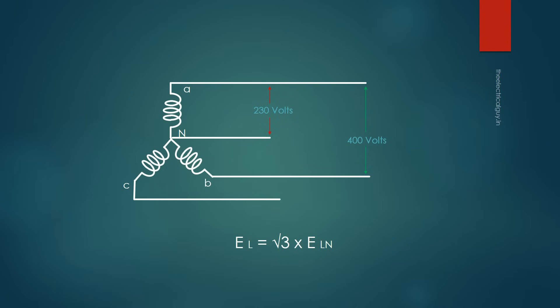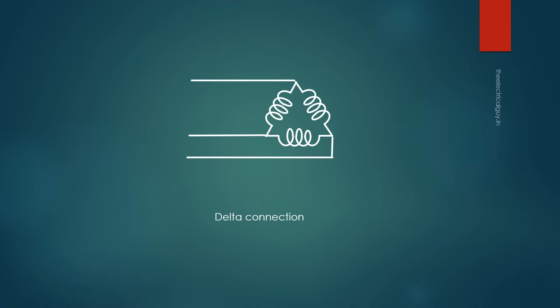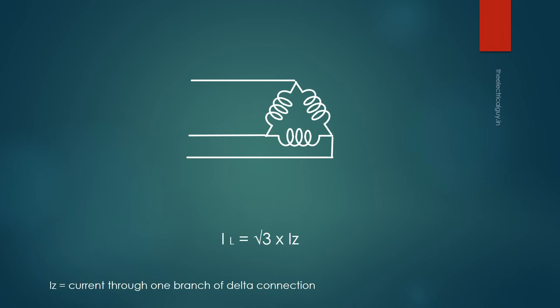Another way to connect a three-phase system is the delta connection, named because it resembles the Greek letter delta. In delta connection, the voltage across each element is the same as the line voltage. However, the current through each element is different from the line current. Applying Kirchhoff's law, you find that the line current is root 3 times greater than the current in each branch of the delta-connected system.